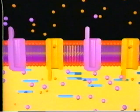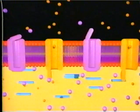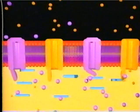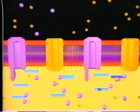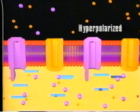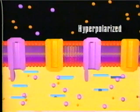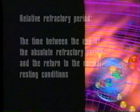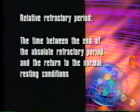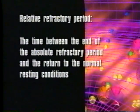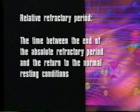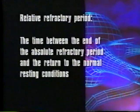The membrane can't respond normally to stimulation until the voltage-regulated potassium channels close. This process starts at around minus 70 millivolts, and for a brief time, the membrane is hyperpolarized. The time between the end of the absolute refractory period and the return to normal resting conditions is called the relative refractory period.